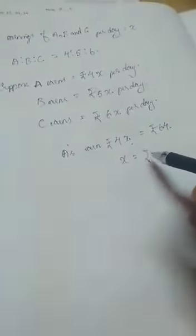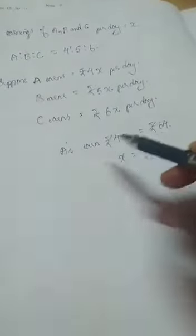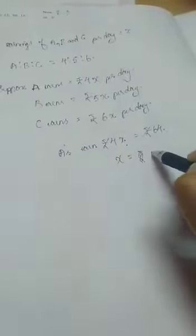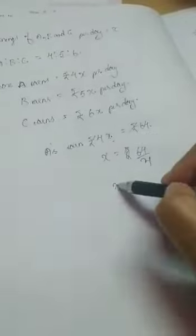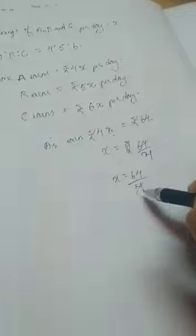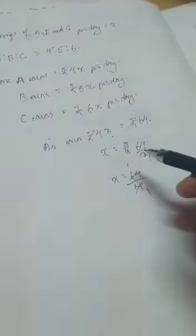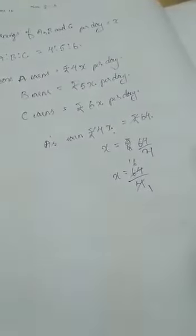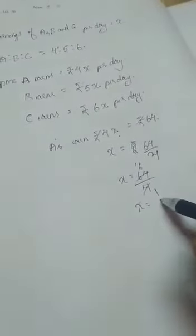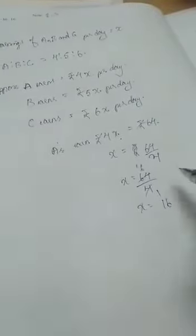Now X will be equal to, this rupees will get cancelled. So we will write 64 by 4. X is equal to 64 by 4. We can have 4 ones of 4. You can divide in your own way. It is 16. We will get 16. X value is 16.